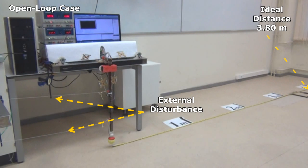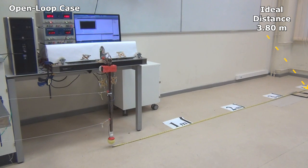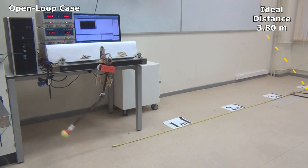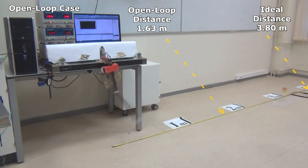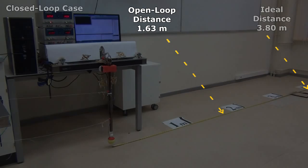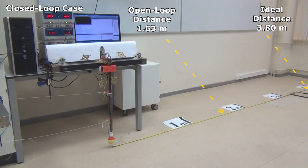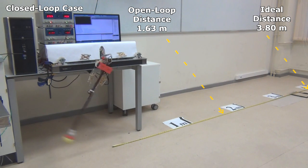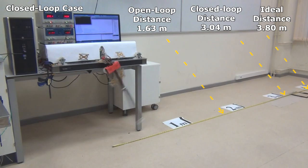To compare the robustness of the closed-loop control to the open-loop approach, experiments were conducted with external disturbance applied to the robot. The external disturbance is applied through tendons attached to both links of the robot via magnets. The open-loop control results in 1.63 meters throwing distance. The throwing distance with closed-loop control is 3.04 meters, which is close to the distance obtained in the nominal case.